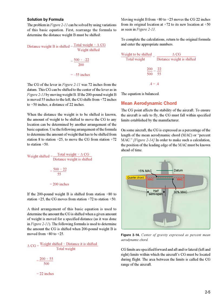Use the following arrangement of the formula to determine how much weight must be shifted from station +80 to station +25 to move the CG from station +72 to station +50. If the 200-pound weight B is shifted from station +80 to station +25, the CG moves from station +72 to station +50. A third arrangement of the basic equation determines the amount the CG shifts when 200-pound weight B is moved from +80 to +25, moving the CG 22 inches from +72 to +50, as seen in figure 2-13.